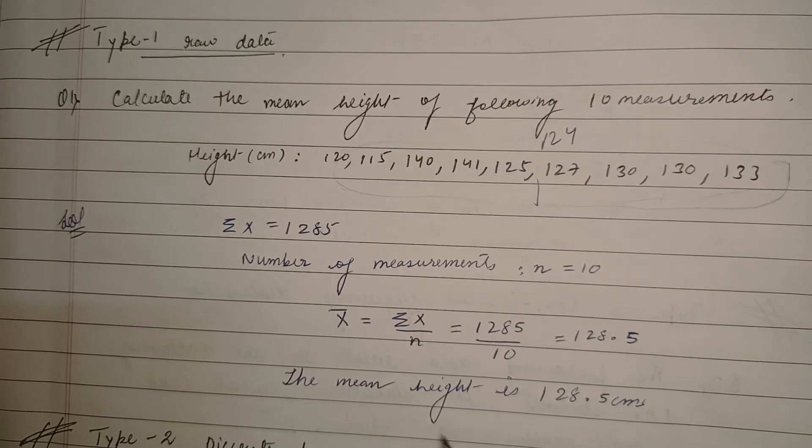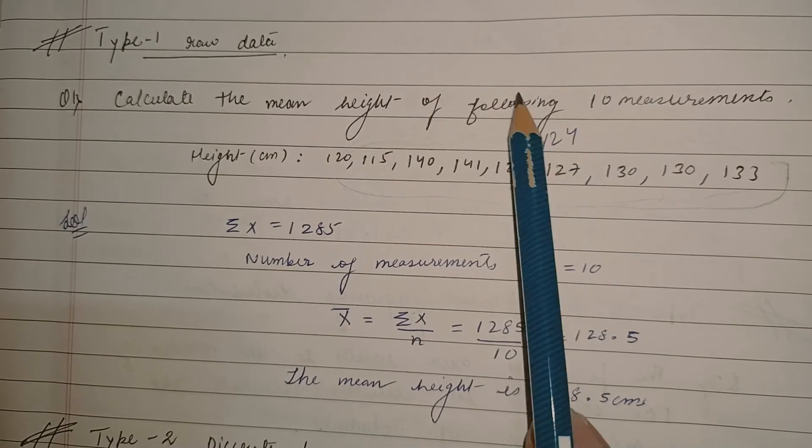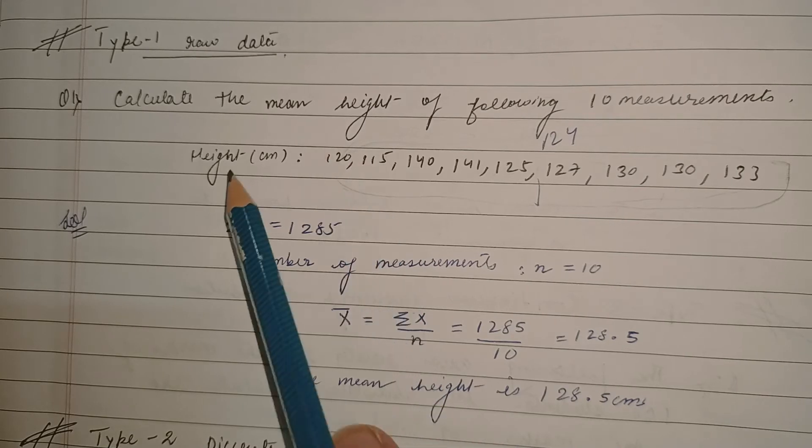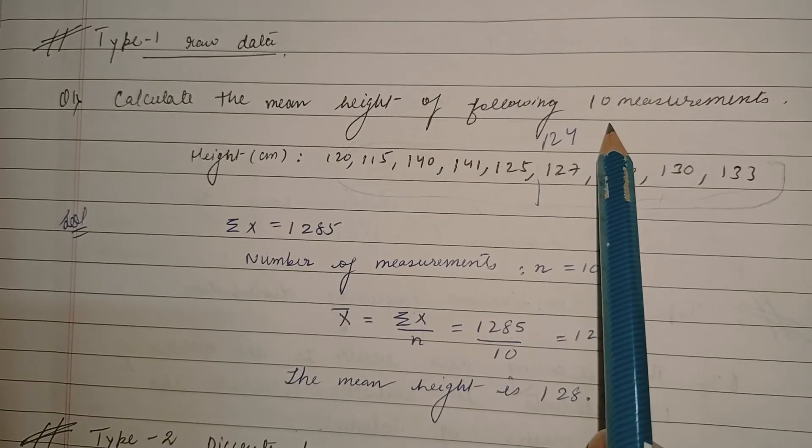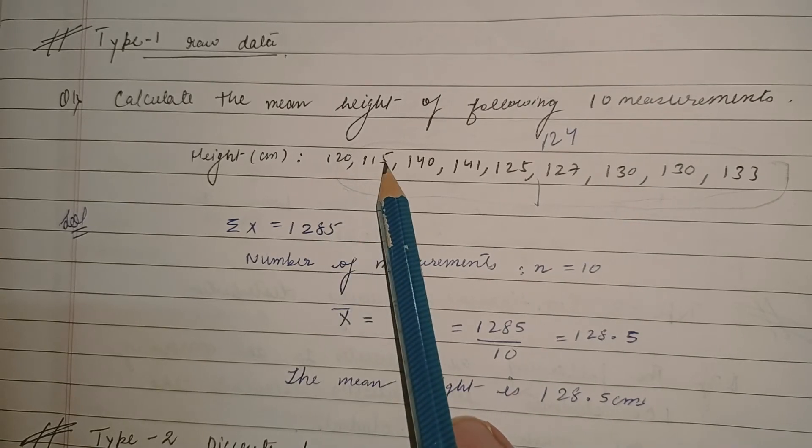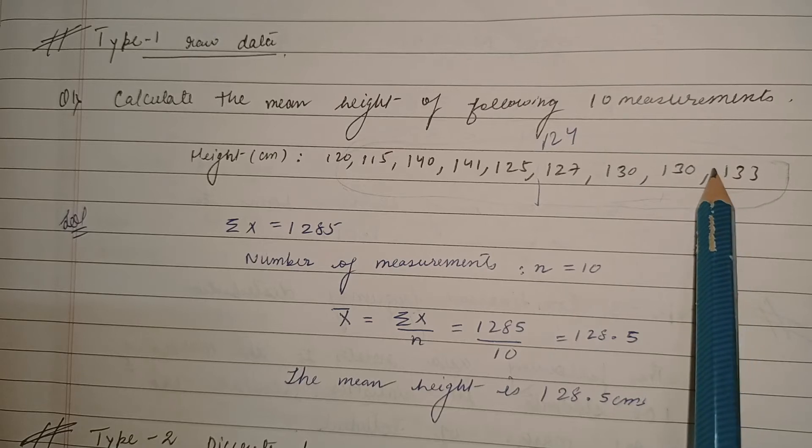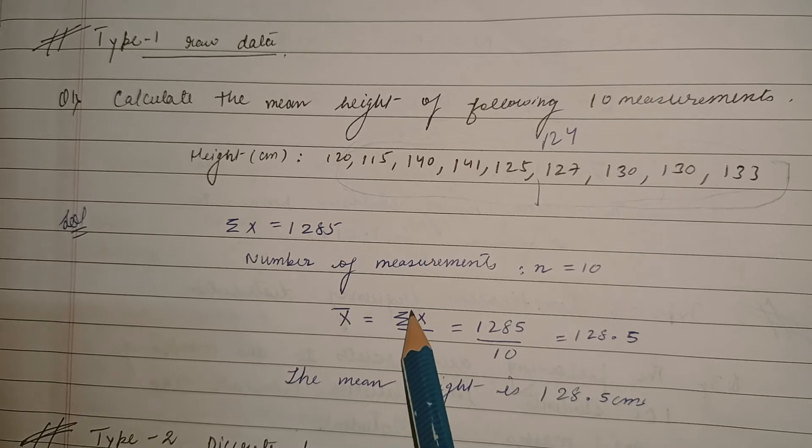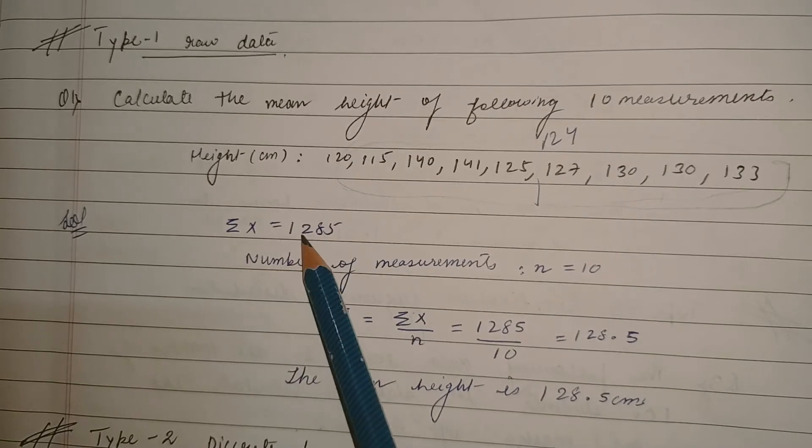Type 1 problem is based on raw data. The heights are given: 120, 115, 140, 141, and so on. 10 values are given. Then how would you find the mean? We know the formula that for raw data mean is summation of the observations by the number of observations. So when we add these numbers the summation would be 1285 and the number of measurements, that is the observations, is 10.